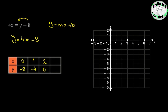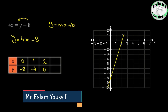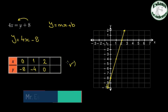So the first point is (0, negative 8), the second is (1, negative 4), and the last is (2, 0). By graphing, we find this relation is represented as a straight line. Because this line is not a vertical line, this relation will be a function.